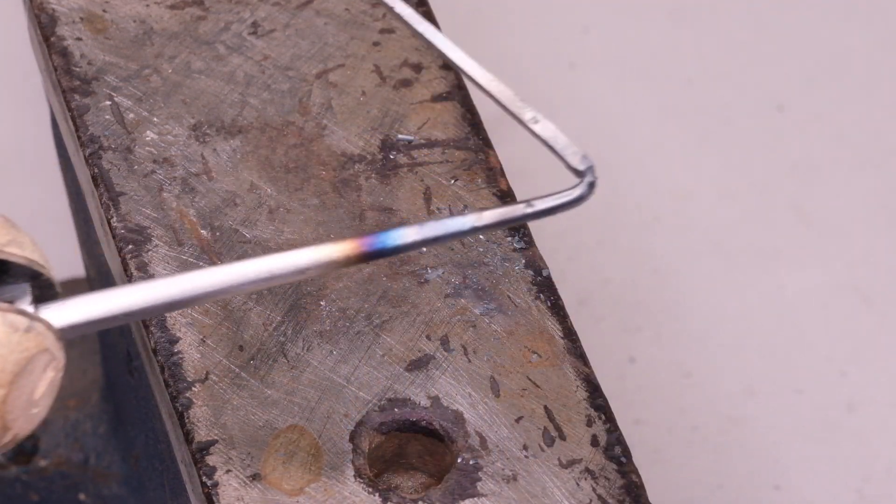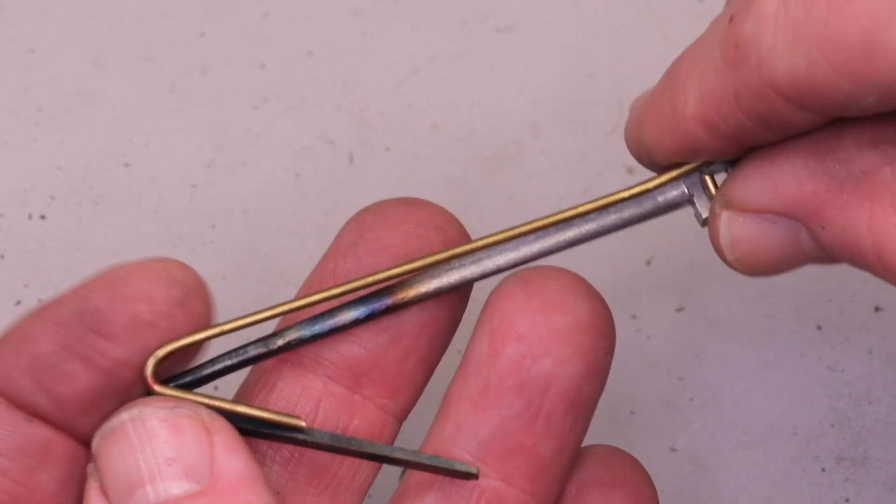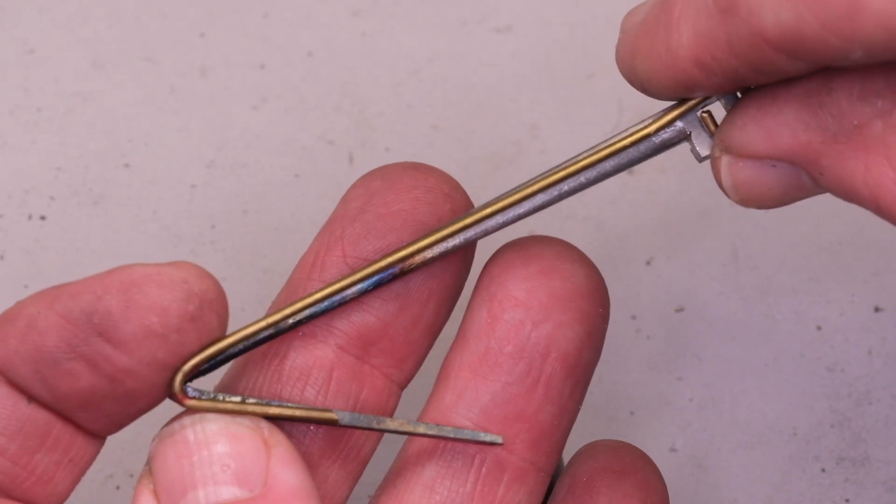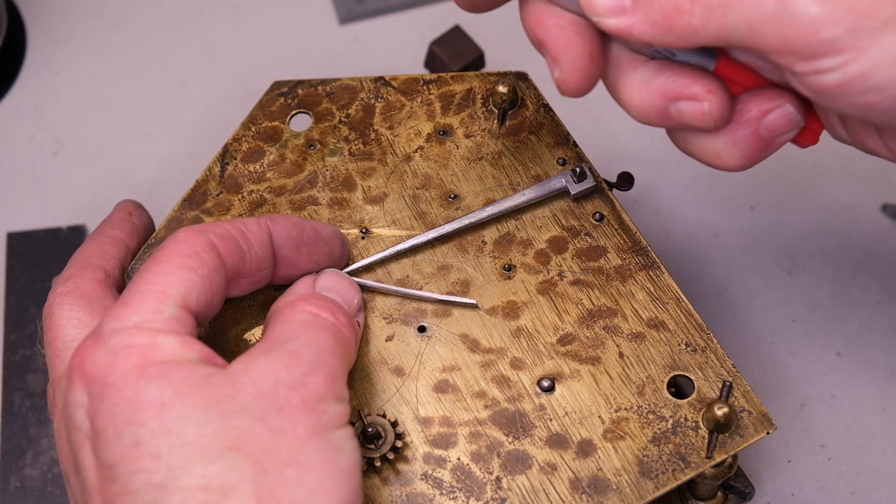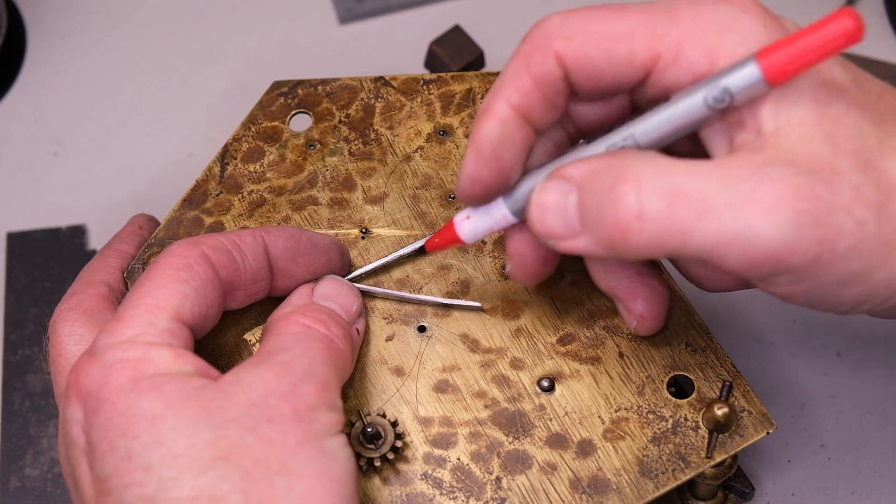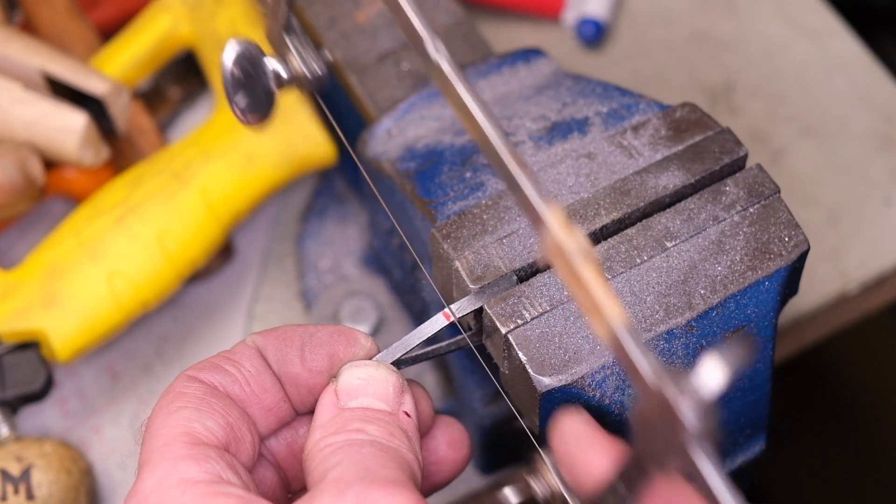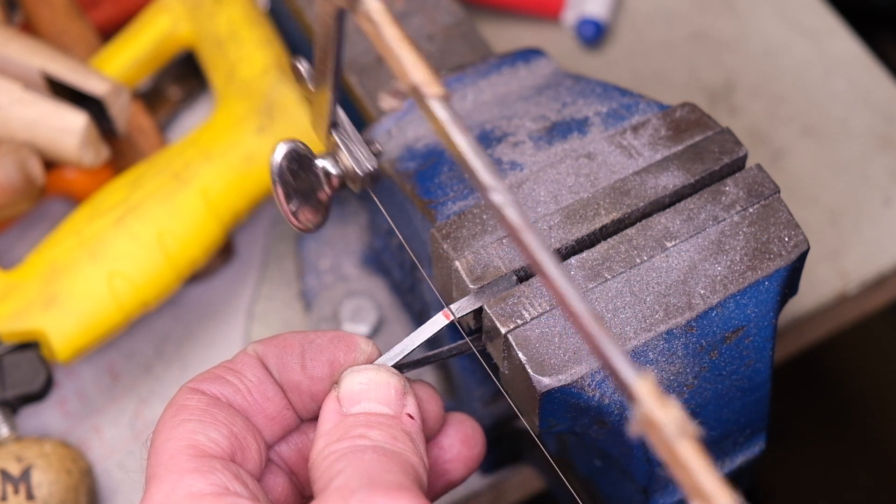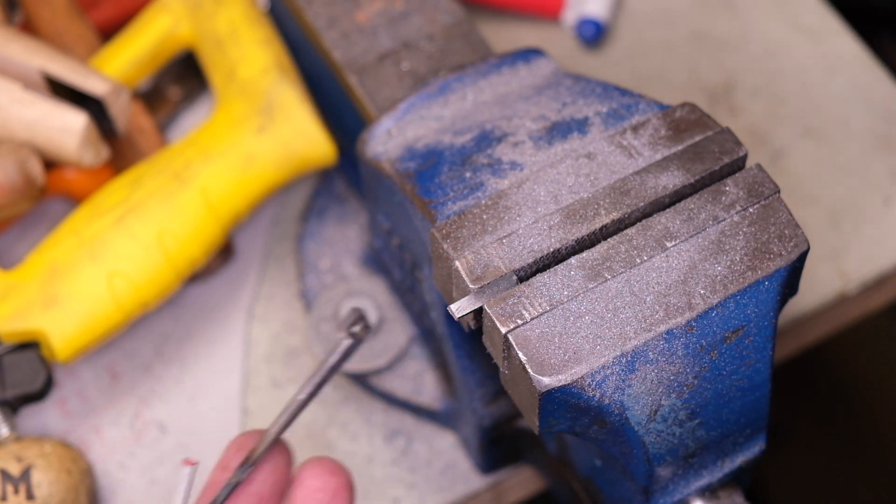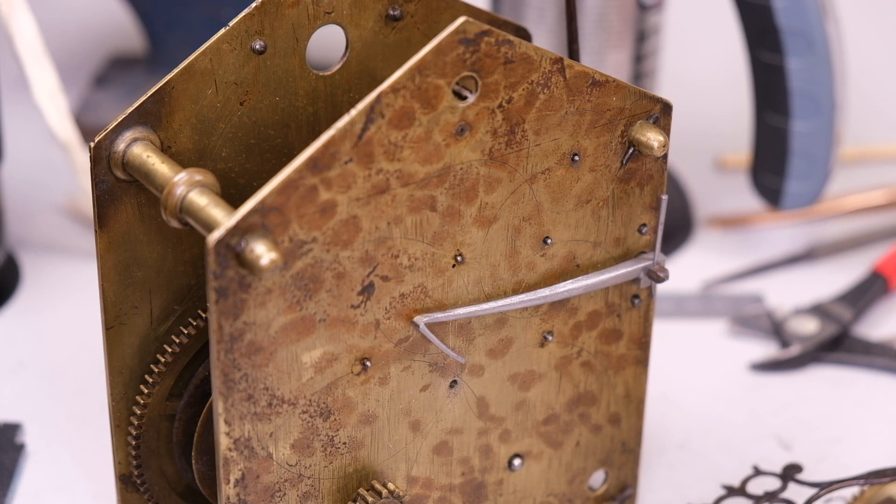And then I've left the thing over length so I can cut it down with a piercing saw. And then I can try with the hand in place and the dial in place and slowly begin to shorten the nose of the lifting piece until the hand is released in the correct position.